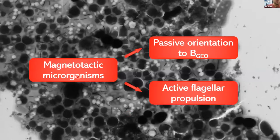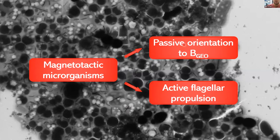These magnetotactic microorganisms have two unique features: they can passively align or orient themselves to the Earth's geomagnetic field, and through active flagellar propulsion they swim and respond to that passive orientation.